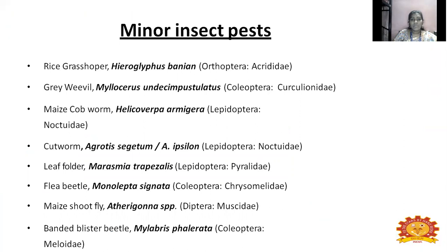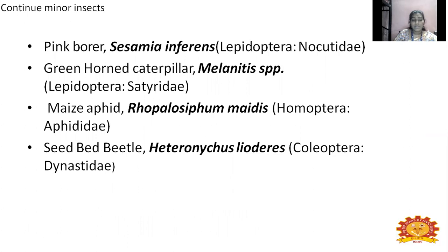Some minor insect pests of maize include: rice grasshopper, grey weevil, maize cobworm, cutworm, leaf folders, flea beetle, maize shootfly, banded blister beetle, pink borer, green horned caterpillar, maize aphid, and seed corn beetle. These pests are also pests of sorghum. Each pest will be explained with their life cycle, damage caused to the maize crop, and how they can be managed.